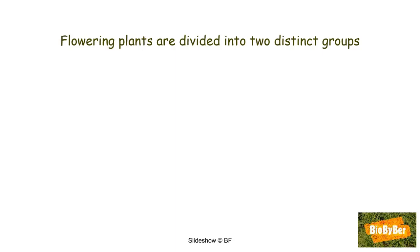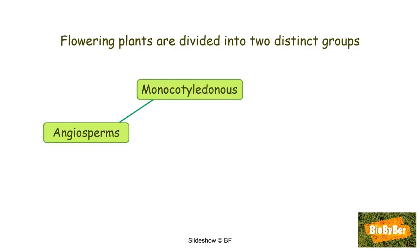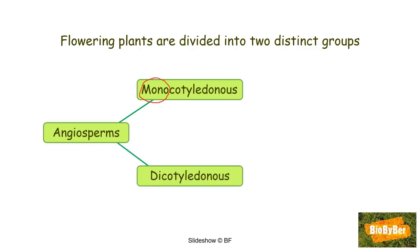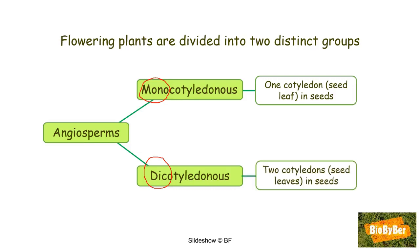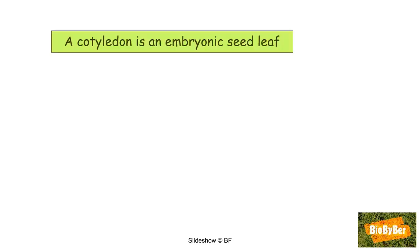Flowering plants can be divided into two distinct groups: the monocotyledonous group, more commonly known as the monocots, and the dicotyledonous group, commonly known as the dicots. 'Di' quite often means two. Monocots have one seed leaf, or one cotyledon, in their seeds, whereas dicot plants have two cotyledons, or two seed leaves, in their seeds.